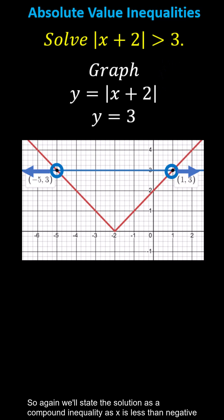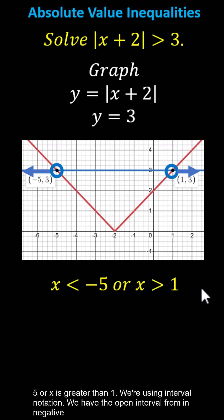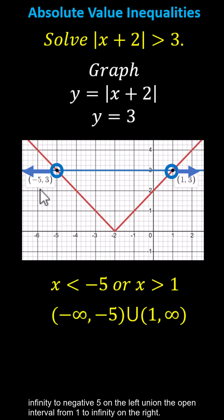So again we'll state the solution as a compound inequality: x is less than negative 5 or x is greater than 1. Using interval notation, we have the open interval from negative infinity to negative 5 on the left, union the open interval from 1 to infinity on the right. I hope you found this helpful.